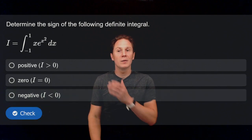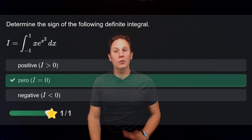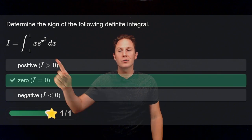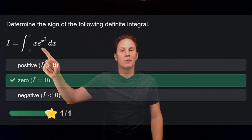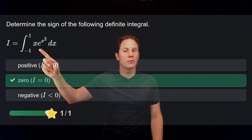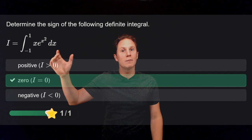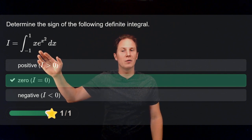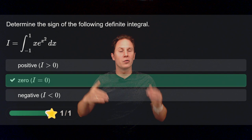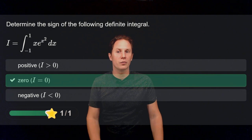Determine the sign of this definite integral. This one is 0, because the function we are integrating is an odd function. Whatever values it takes on the interval from 0 to 1, it takes the same values but with a minus sign on the interval from negative 1 to 0, and those values cancel each other out, giving 0 for this integral.